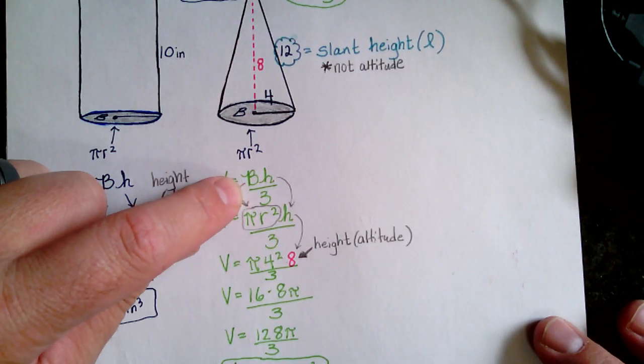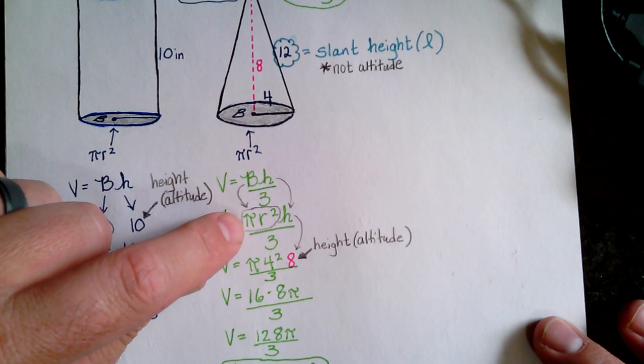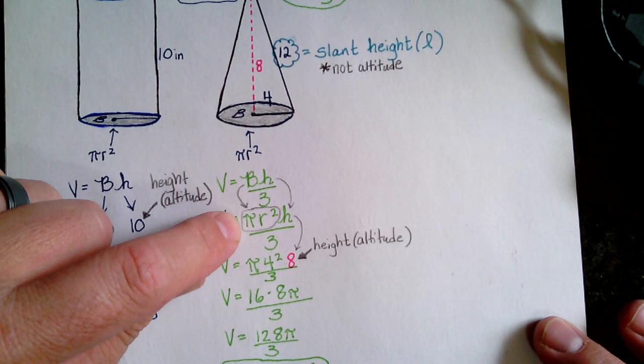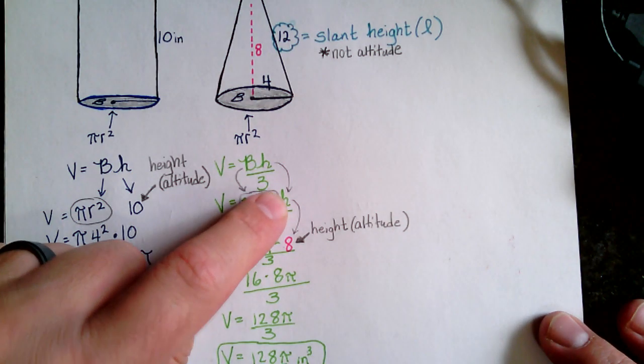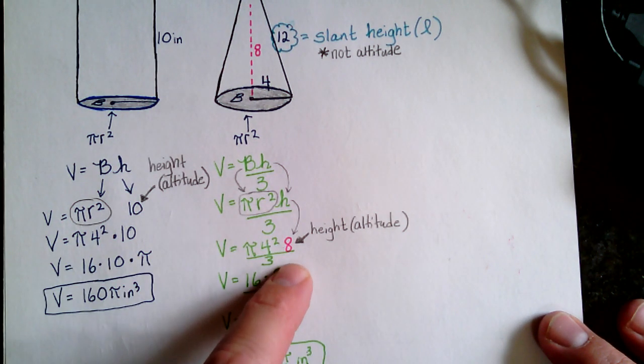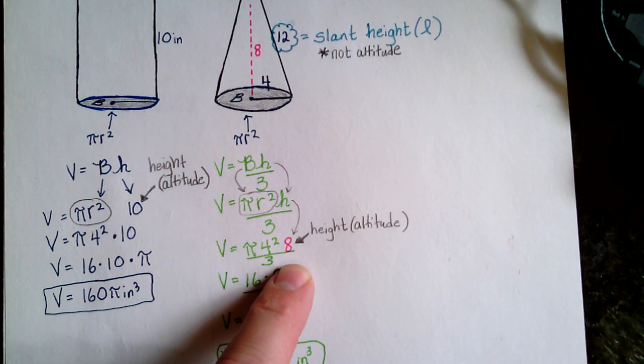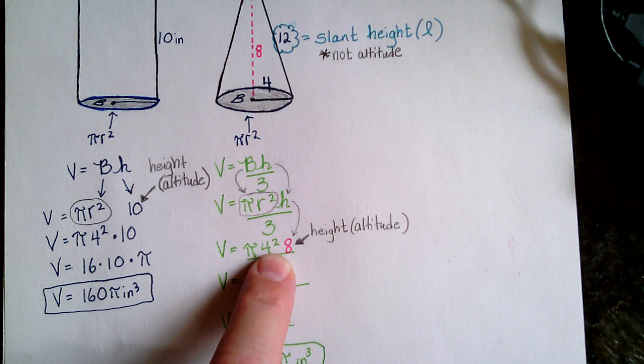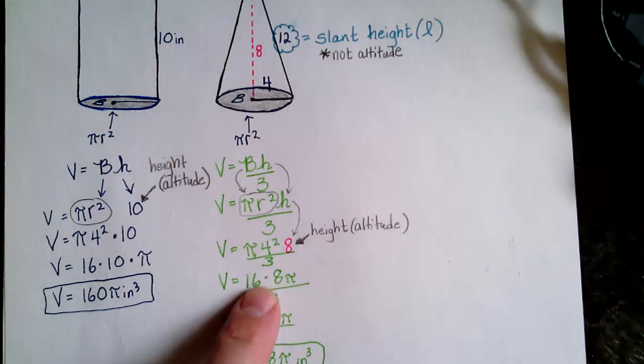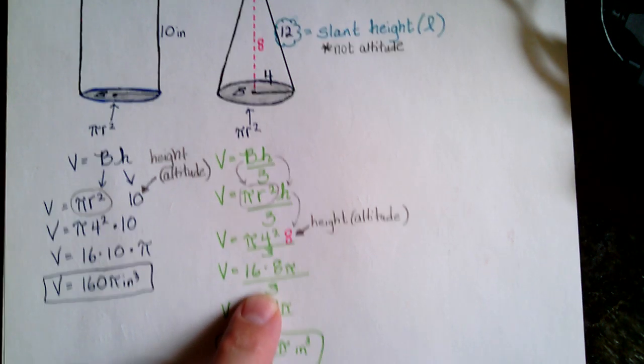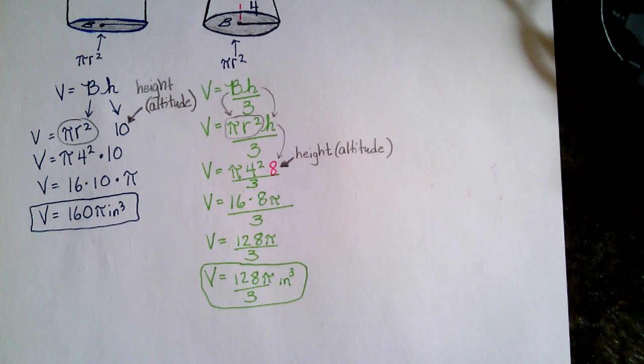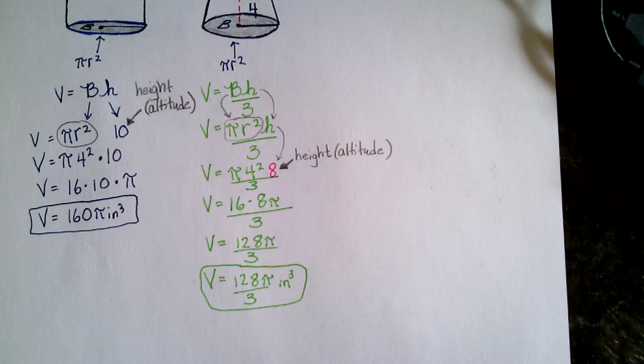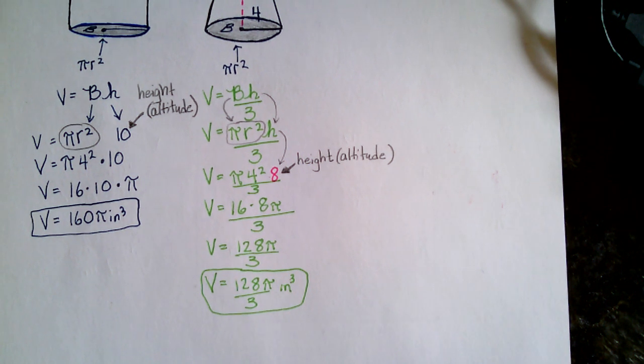So the area of the base turns into the area of the circle because the circle is a base, pi r squared. We're going to divide by three again. The height, remember, is eight, not twelve, because you're looking for the altitude. Pi times the radius squared times the altitude. So that's 16 times eight pi, divided by three. One-twenty-eight pi over three. And if our units are inches, then it would be cubic inches.